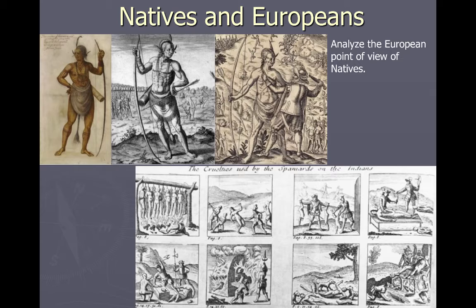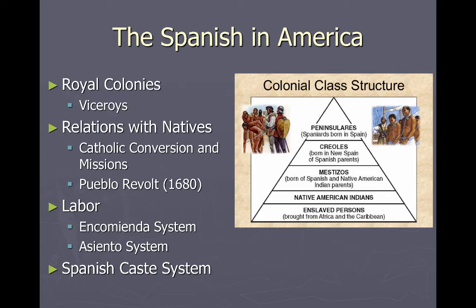Key concept 1.2.2 is basically all Spain — the Spanish Empire. This is where you can reference the Aztecs, Mayans, and Incas if you choose. I talk about how it's an absolute monarchy run by the kingdom — the Royal colonies with viceroys running the show. Spain is super Catholic; they really want to spread Catholicism, leading to run-ins with the native population through missions and the Jesuits trying to convert natives to Catholicism.